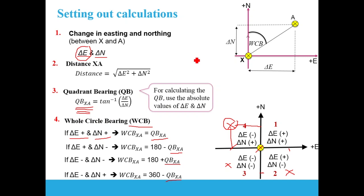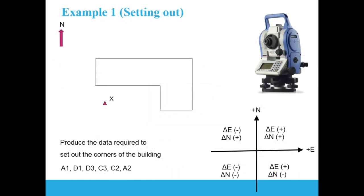Now let's take an example. We have a building with corners to be set out from station X. The corners are named using a grid: lines A, B, C, D (horizontal) and lines 1, 2, 3 (vertical), giving corners A1, D1, D3, C3, C2, and A2. The data required to set out each corner are the whole circle bearing and the distance from X to that corner.